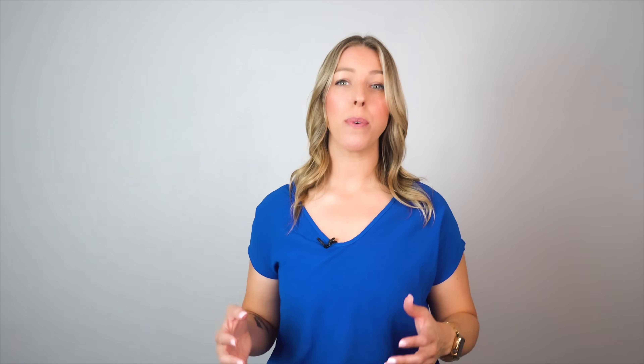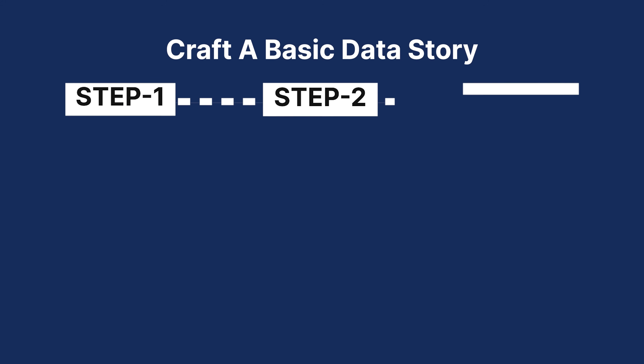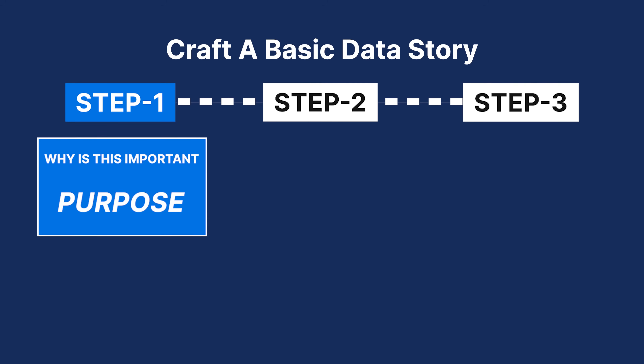You can use this exact structure in your data storytelling. Here is a simple three-step process to craft a basic data story. At the middle of your data story is where the data is — that's where the action happens. But you didn't just arrive at these numbers; you began with a question or a reason. And that is step number one: communicating the purpose, or the why, behind your data.